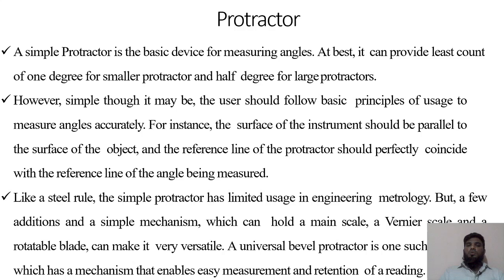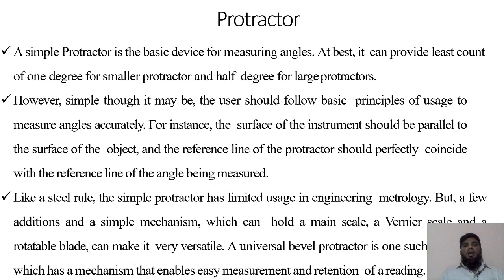The first instrument generally used for measuring angles — which you've used since school days — is the protractor, a basic measuring device. It can provide a least count of only one degree for small protractors, and some can even have half a degree. However simple it may be, the user should follow basic principles of usage. The surface of the instrument must be parallel to the object surface and the reference line should be properly aligned, otherwise the angle measurement will give errors.